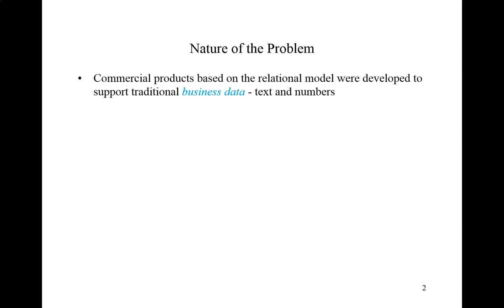The relational model — the theory on which commercial database products like Oracle Database, IBM DB2, and Microsoft SQL Server are based — was given to us by E.F. Codd around 1969-1970. In the mid-1980s, commercial systems such as those just mentioned were adopted by many businesses to support their daily operations. Such databases were quite well suited to deal with the dominant data types in use at the time: text and numbers.